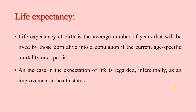Next is life expectancy — not exactly a death rate, but related to death. Life expectancy at birth means the average number of years a person is expected to live, considering the different age-specific mortality rates in the given population. If the infant mortality rate or under-5 mortality rate is very high in a population, life expectancy may be low. An increase in life expectancy is regarded as an improvement in the health status of the population.